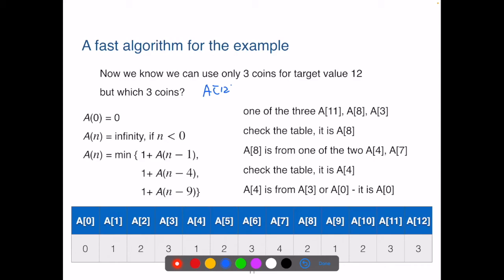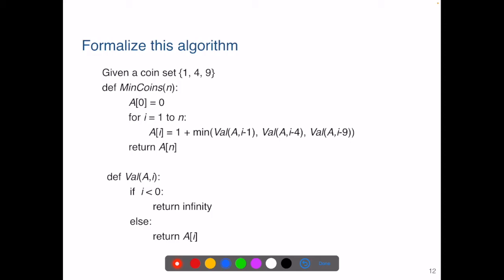Now we know the path getting to A(12). That is through A(8), A(4) and A(0). So from 12 to 8, 12 minus 8, that's a 4 cent coin. From 8 to 4, that's another 4 cent coin. From 4 to 0, that's the third 4 cent coin. So we know the 3 coins are 3 four cent coins. This is the process of tracing back and getting the detail of the solution.